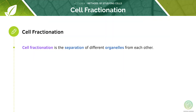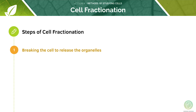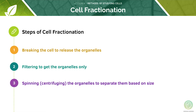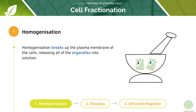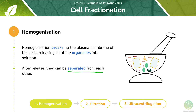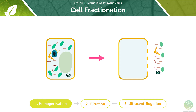Now let's cover the principles of separating cell components. We need to separate out different organelles from each other, which requires a step-by-step experimental process. First, we break the cell to release the organelles. Next, we filter to get the organelles only. The next step is to centrifuge the organelles and separate them by size. In summary there are three steps: first, homogenisation, which breaks up the plasma membranes of cells, releasing all the organelles into solution; after release, they can be separated from each other.